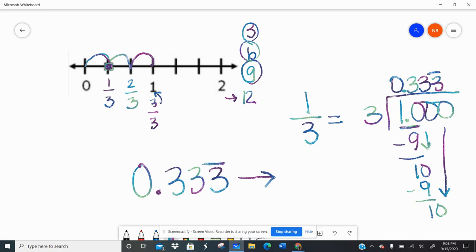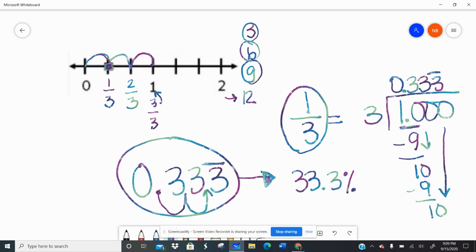If I want to make that a percent, I only move 1, 2 spaces. So it's 33.3%. So 1 third is 0.3333 repeating, which is 33.3%. And then I put that little line to show that I'm repeating.